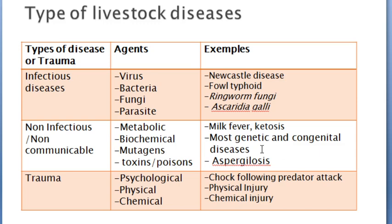Under this category, we can name aspergillosis. Aspergillosis is a feed and food poisoning caused by a fungus. What really causes the disease is the toxins secreted by the fungus named Aspergillus flavus, present in grains that are poorly conserved and then used to formulate animal feed.